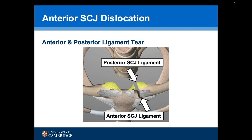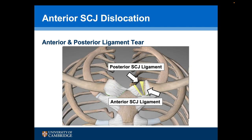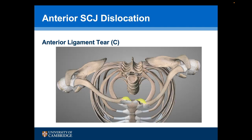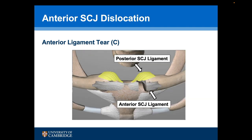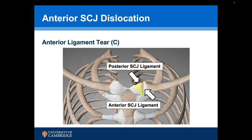We can see that both ligaments are torn when the joint has been reduced. However, the posterior sternoclavicular joint ligament is stronger than the anterior ligament, and on some occasions the posterior ligament remains intact. So when the joint is reduced, the anterior sternoclavicular joint ligament has been torn but the posterior joint ligament remains intact.